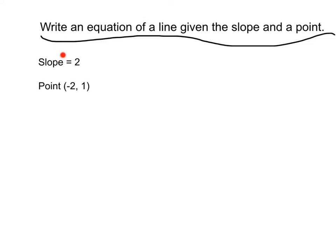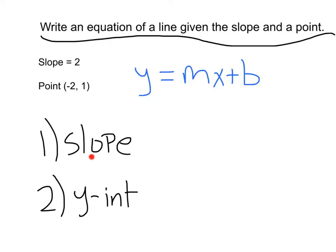Alright, example numero dos. Write an equation of a line given the slope and a point. Here we have a slope equal to two and we pass through the point negative two, one. And there ain't no party like a slope intercept party. So let's bring in our y equals mx plus b. Now what were those two things that we needed to write the equation of a line? That's right, the slope and the y-intercept. Well, we've got a slope value of two, there we go, m equals two,